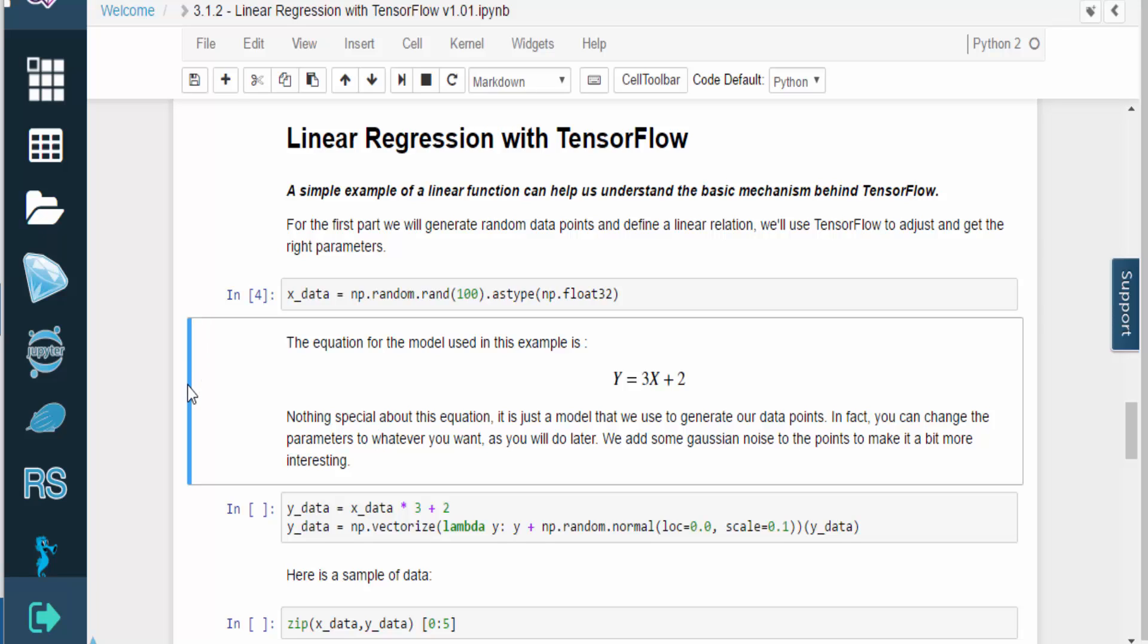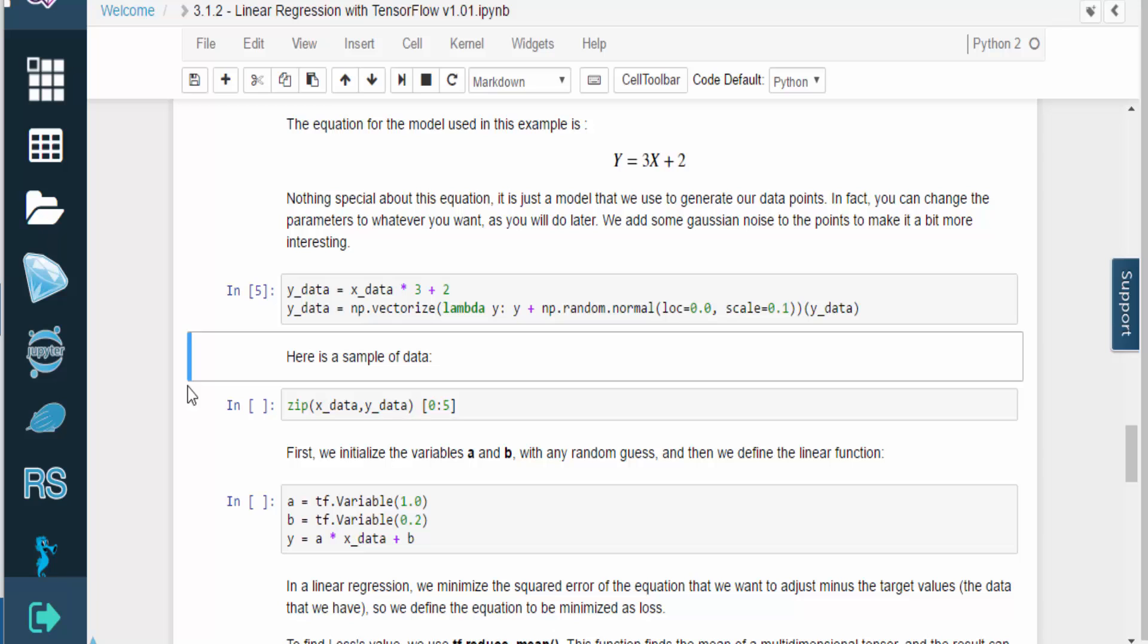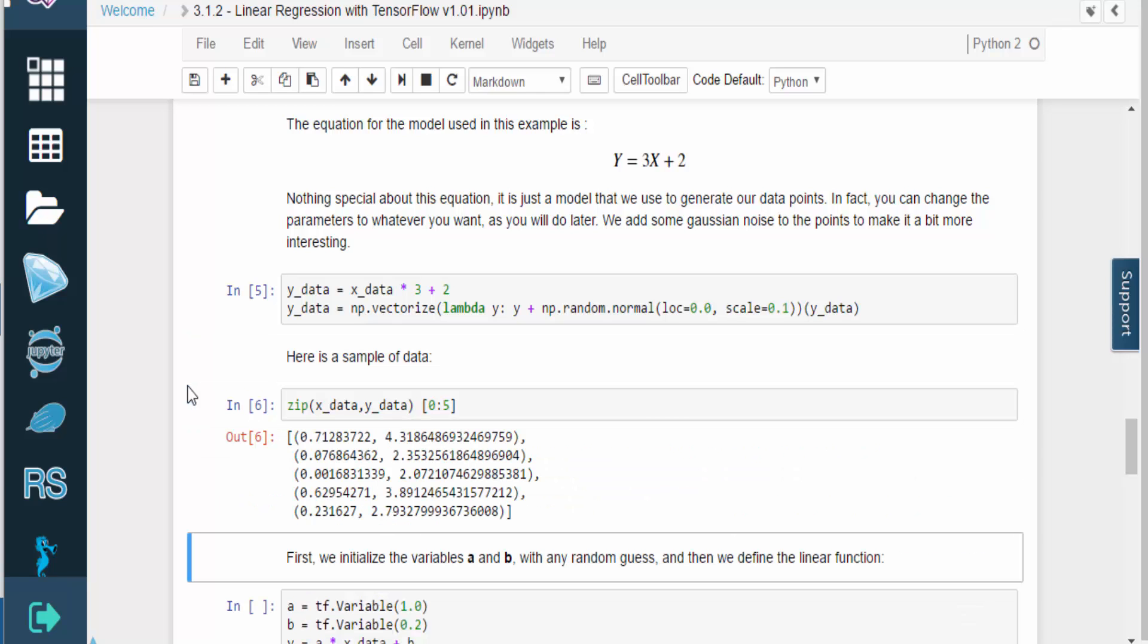This is the equation we'll use to generate random data points. There's nothing particularly special about this equation. We just need a data set to work with for this example. Feel free to change the parameters if you'd like. Here is a sample of the data we just created.